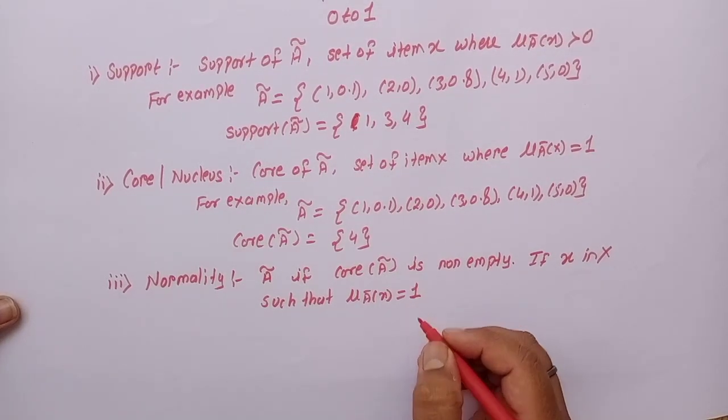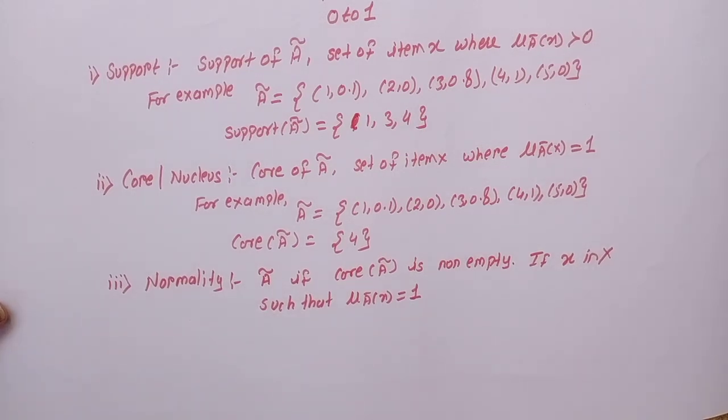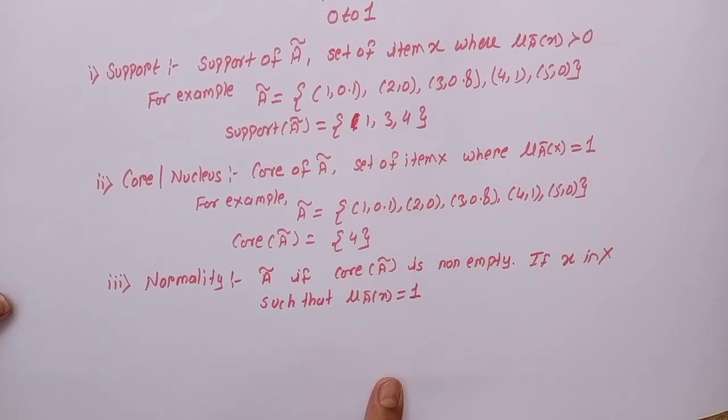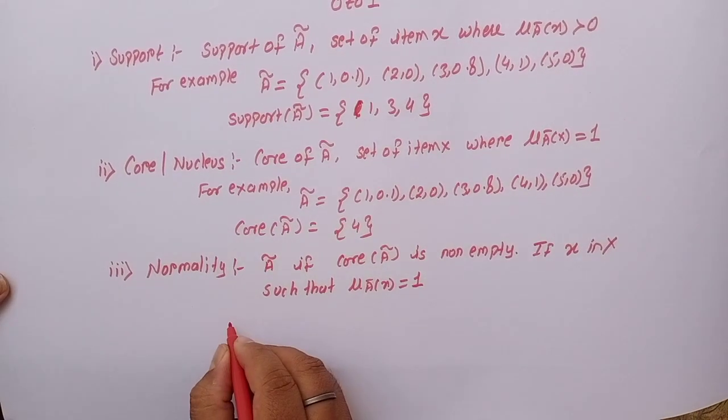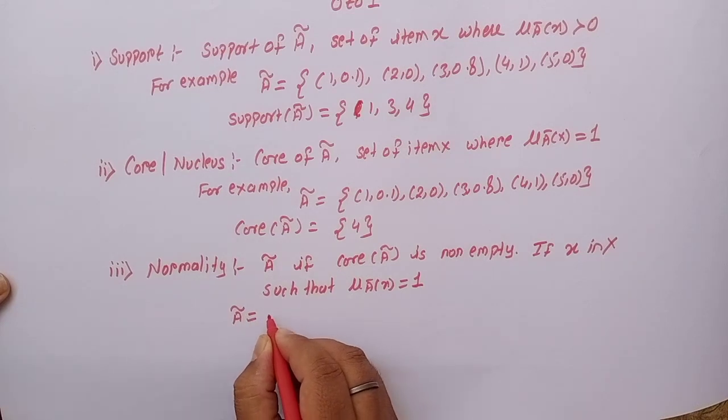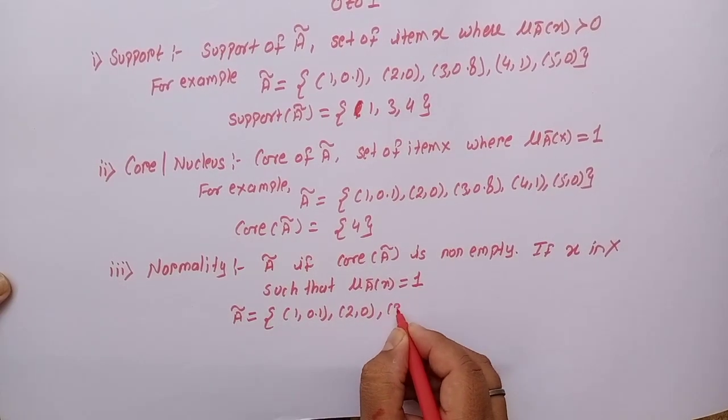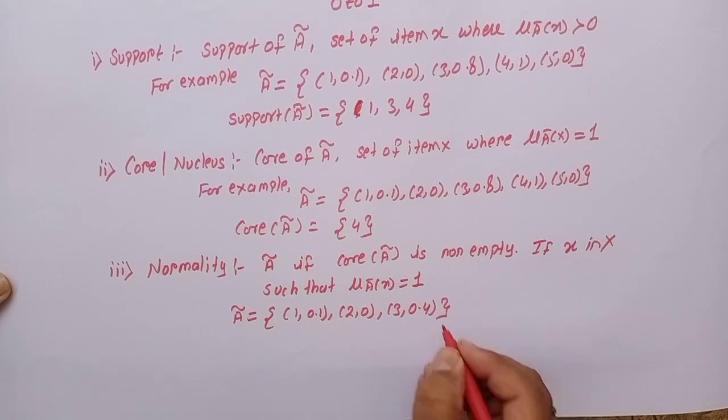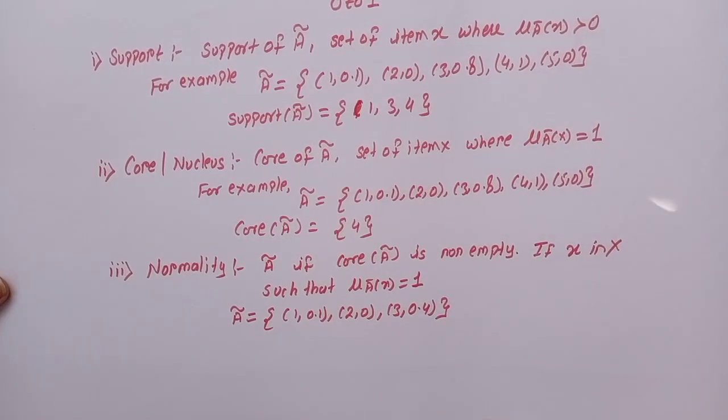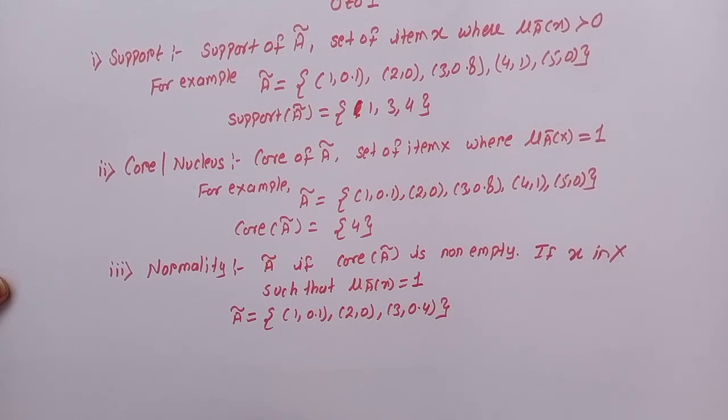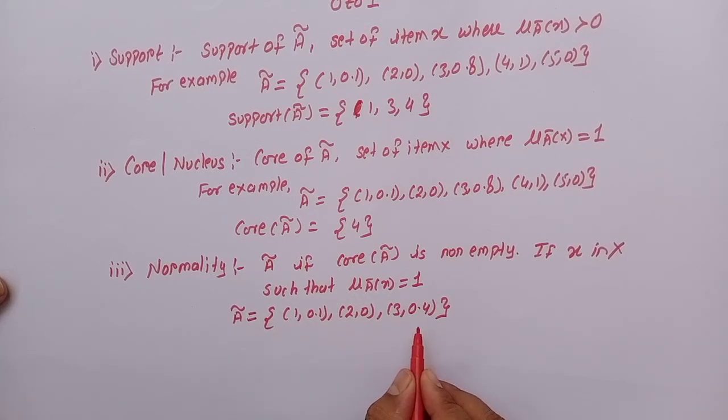Then we say that set is normal, otherwise set is subnormal. For example, if fuzzy set A equals {(1, 0.1), (2, 0), (3, 0.4)}, then this set A is not normal because here none of the x has membership function value equals to one, or we can also say that there does not exist core or core is empty.